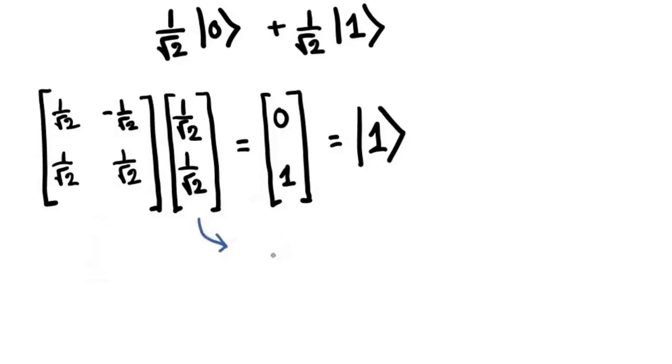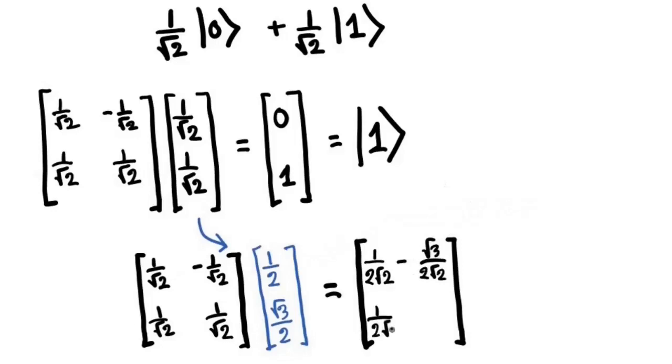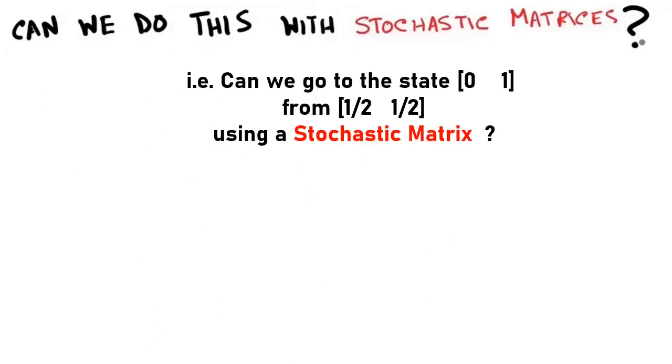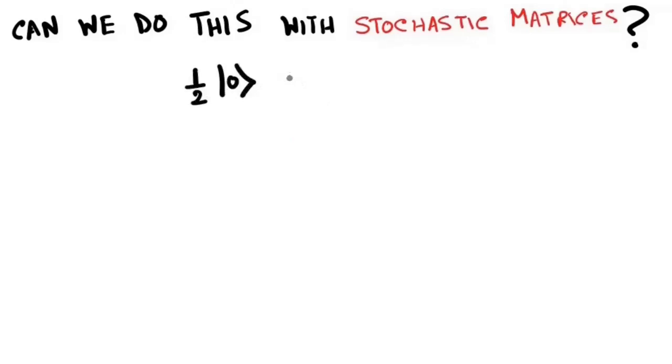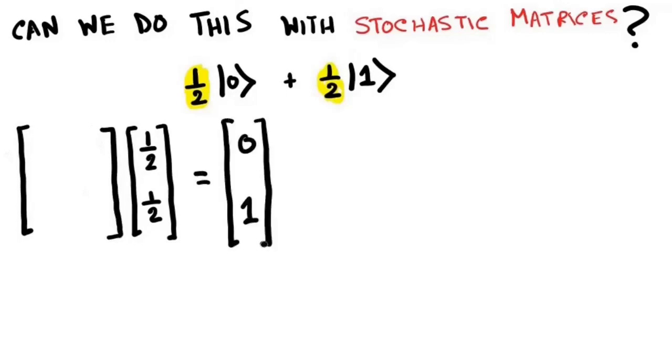Applying a matrix like this one is, in essence, a randomized process as, depending on what our starting vector is, this matrix will take us to a different final resultant vector every time. Interestingly enough, when our starting state is 1 by root 2 ket0 plus 1 by root 2 ket1, the vector it takes us to is ket1. Note that the starting state has equal probability amplitude and hence equal probability on both ket0 and ket1. Can we do this with stochastic matrices like in normal probability theory? Let's say we start with the following vector half ket0 plus half ket1. This again has equal probability on both ket0 and ket1. Is there a stochastic matrix that takes this vector to ket1?